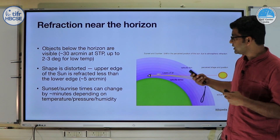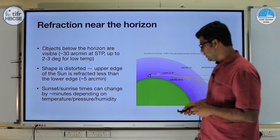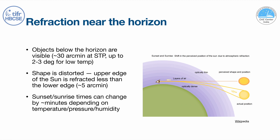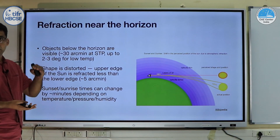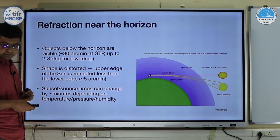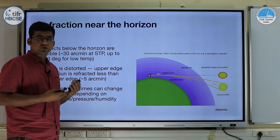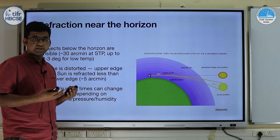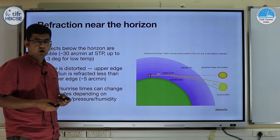The shape of objects also gets distorted. The top edge of the sun is refracted less than the bottom edge by about 5 arc minutes, so when you observe the sun close to sunset it will appear flattened. Sunrise and sunset times can also change by a few minutes depending on the temperature and relative humidity of that day.